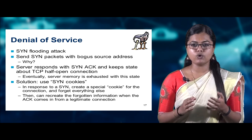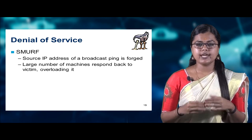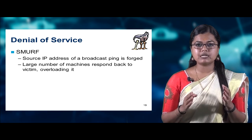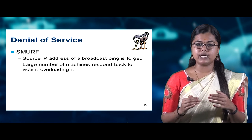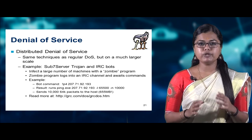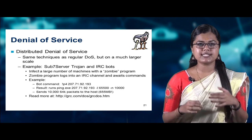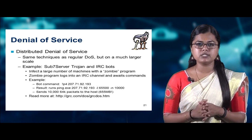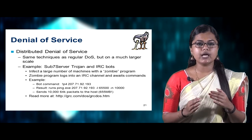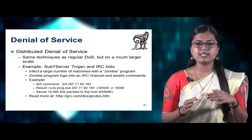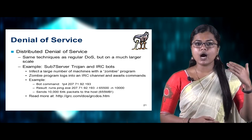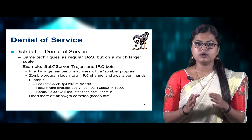Another type of denial of service is Smurf. In this case, the source IP address of a broadcast ping is forged, causing a large number of machines to respond back to the victim, overloading it and causing a denial of service. For distributed denial of service, the same technique as DoS is used but on a much larger scale. An example is the Sub7 server Trojan and IRC bots — these infect a large number of machines with a zombie program that logs into a channel and awaits commands.